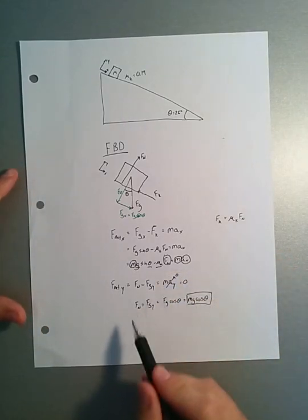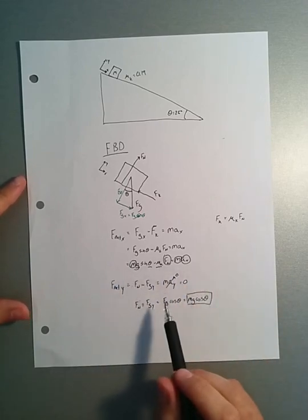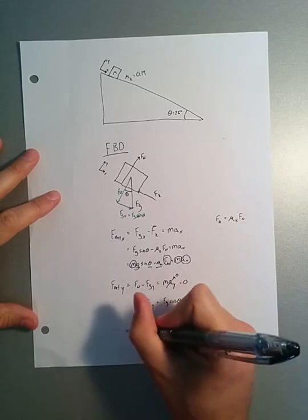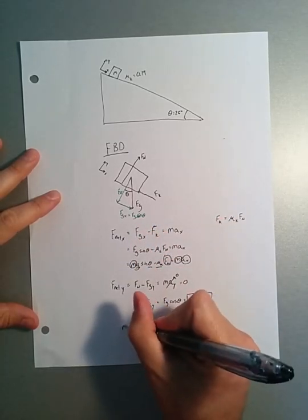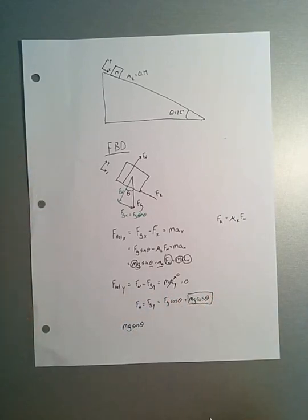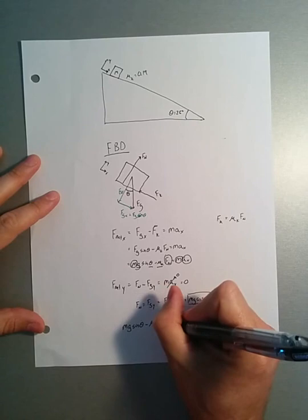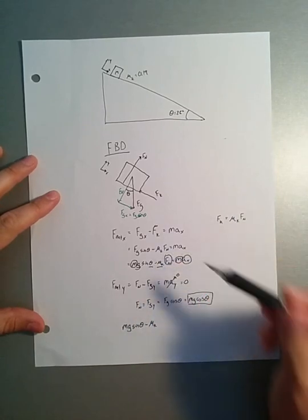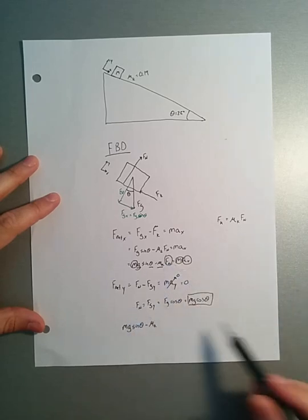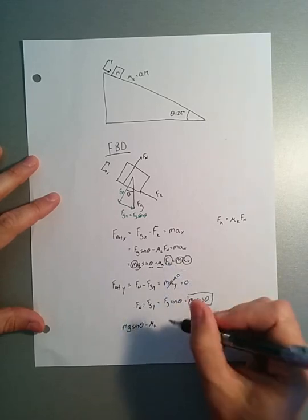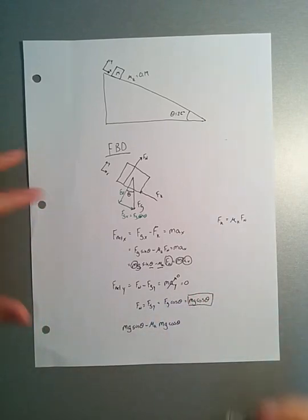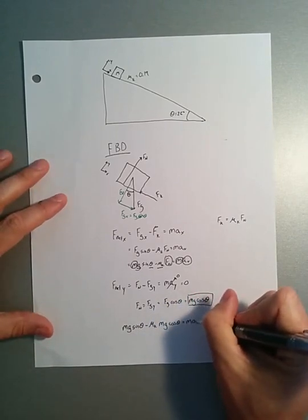Now let's see if we can use this information we have back in this equation and see if that will help us out at all. So we have, just rewriting this equation, mg sine of theta, okay, minus mu k fn. But now I'm actually going to plug in for fn right here, okay? Here's fn, here's fn. fn is just equal to mg cosine of theta. So mg cosine of theta. And that's equal to mass times acceleration in the x direction.